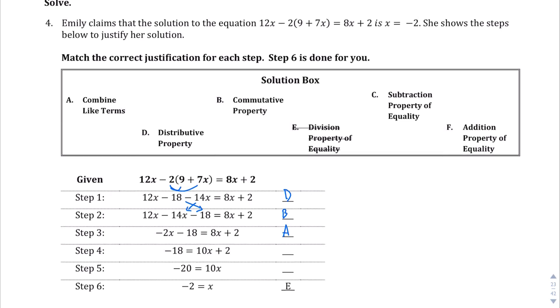In step 4, you have negative 18 plus 10x plus 2. We got rid of that negative 2x on the left-hand side and got moved to the right-hand side. So we had to add 2x to both sides. That is clearly the addition property of equality. And then from there, it looks like that negative 18 becomes negative 20 by subtracting 2 from both sides, which is the subtraction property of equality. And we already have the answer for step 6.